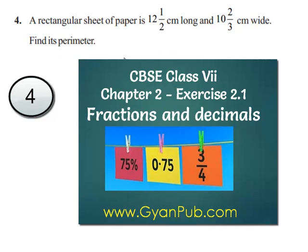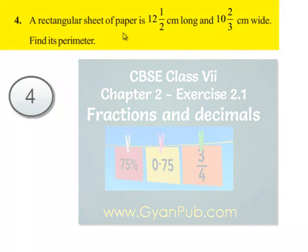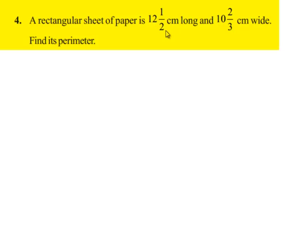Now let us move on to the fourth question. A rectangular sheet of paper is 12 1/2 cm long and 10 2/3 cm wide. Find its perimeter.